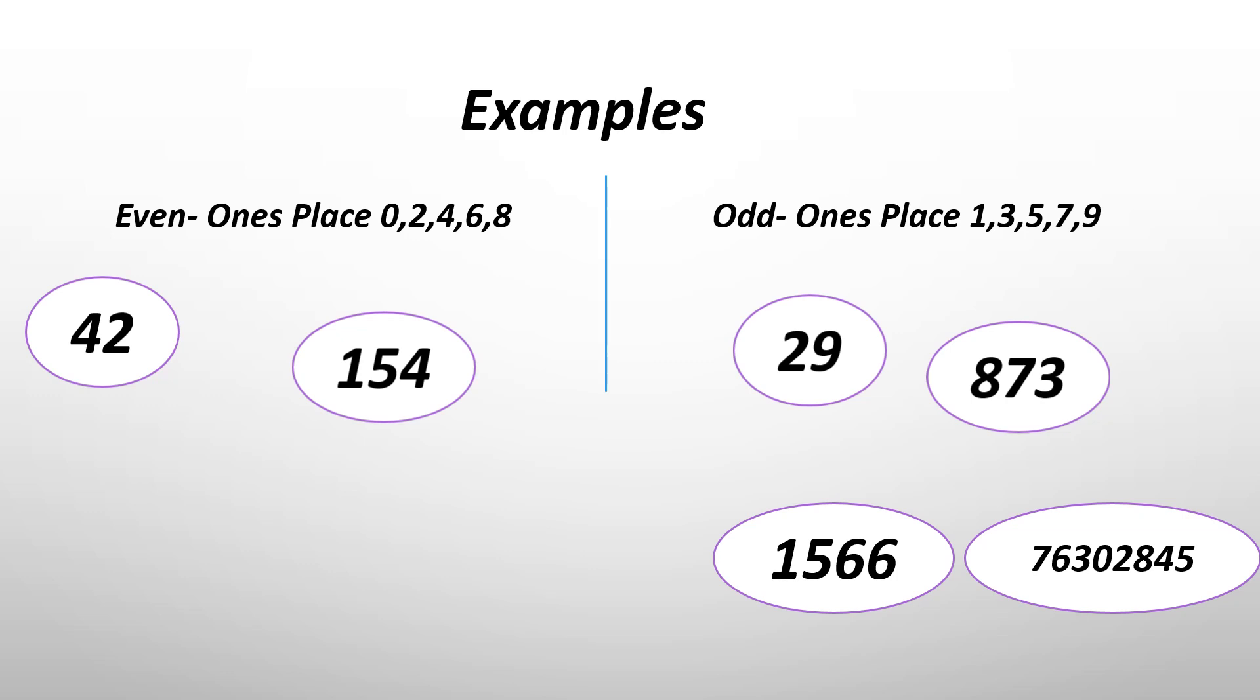Now let's look at 1566. The last number is 6. So it goes in the even section. Now let's look at 76302845. Confused? It's easy. Just look at the last number. It's 5, right? So it goes in the odd section.